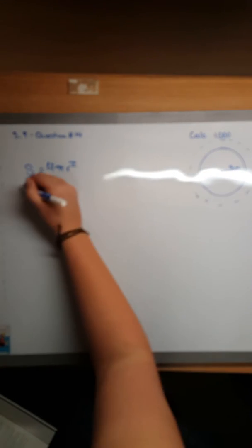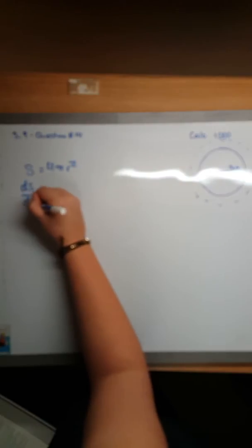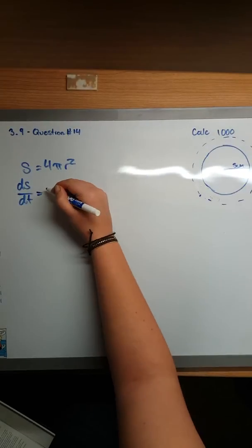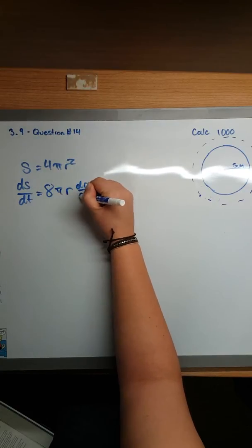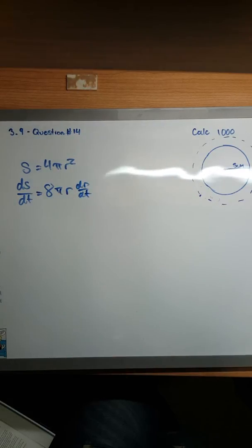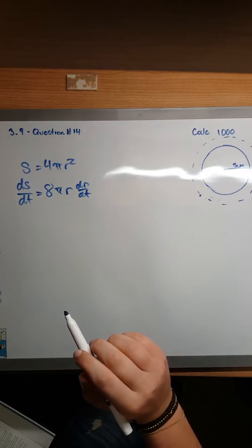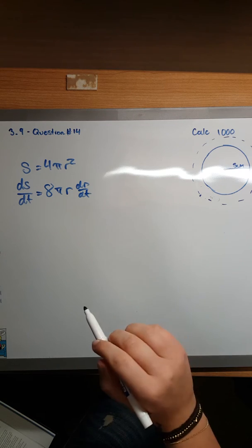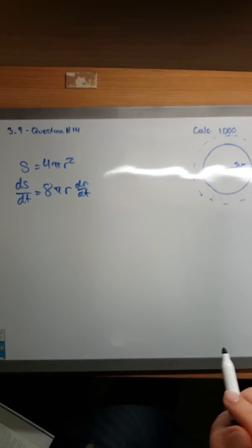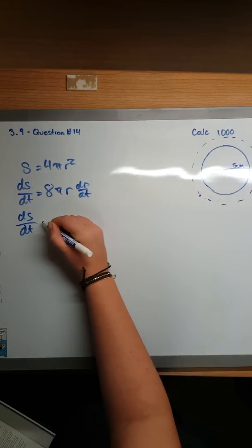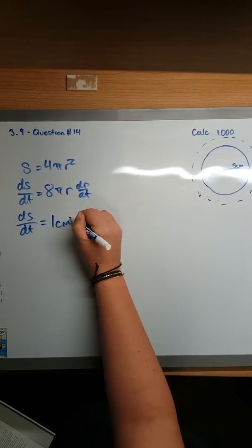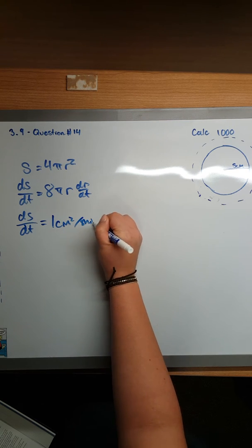Then we're going to find the rate of the changing surface area, which we're going to call dS/dt, which would be, due to the chain rule, 8πr(dr/dt). In the question it tells us that the surface area is decreasing at a rate of 1 centimeter squared per minute, so that makes dS/dt equal to 1 centimeter squared per minute.